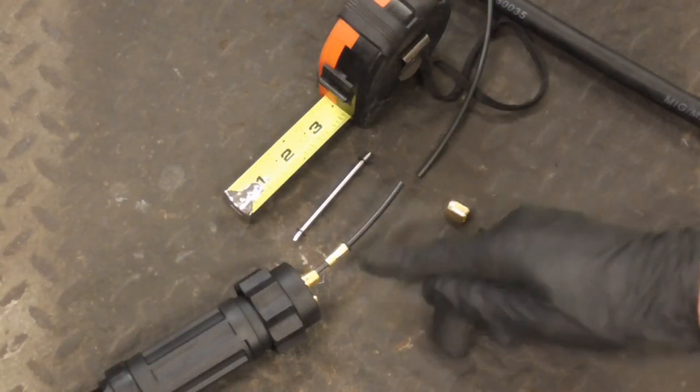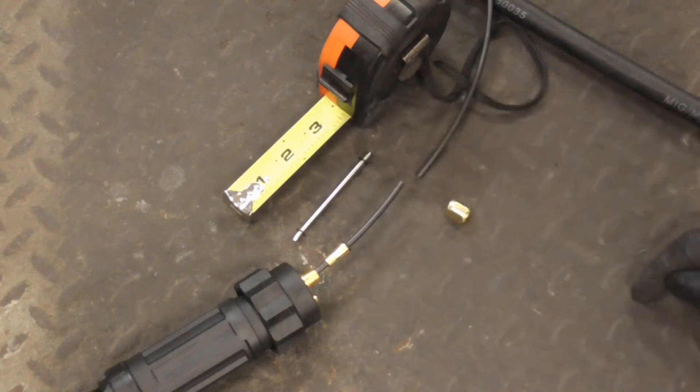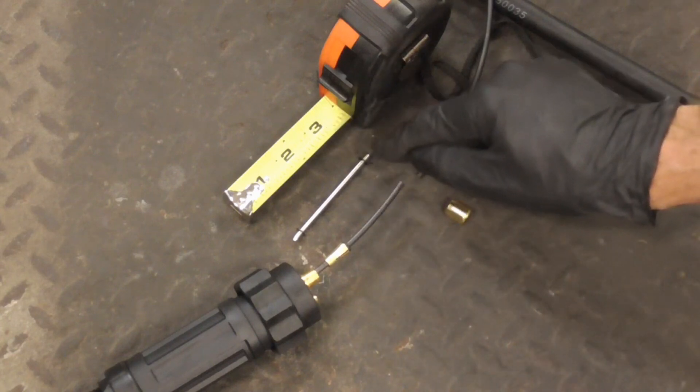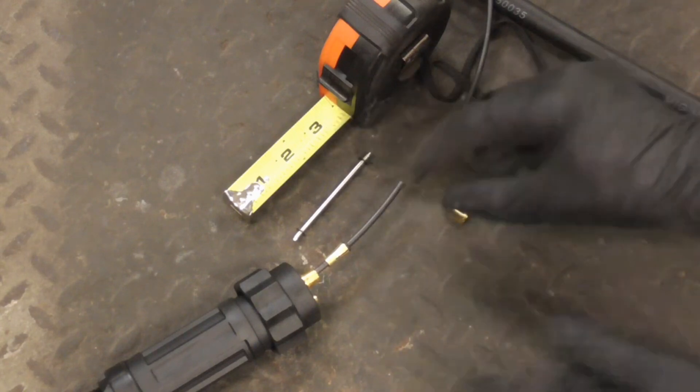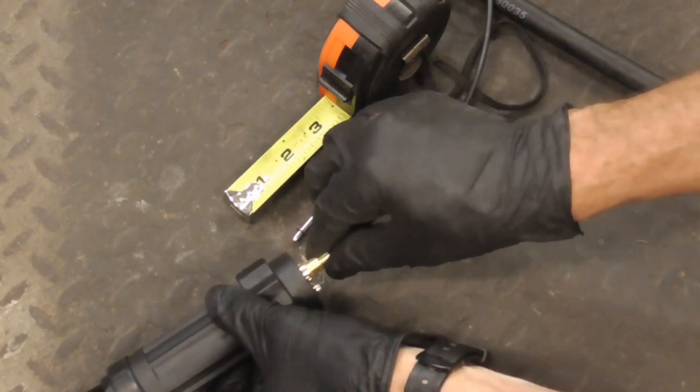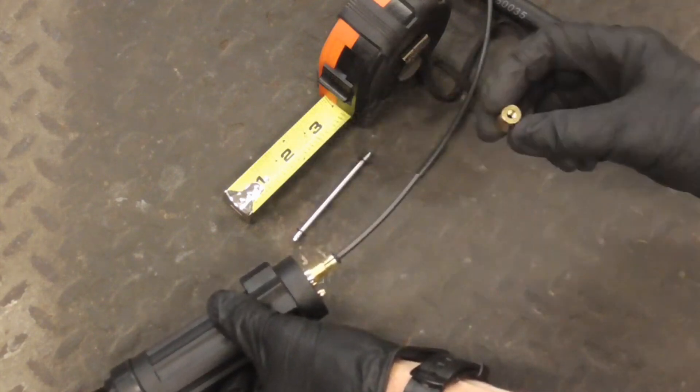On the machine end, you're going to trim the liner at three inches or the length of this part that we're going to remove from the welder. Once you have that done, put this end back together.